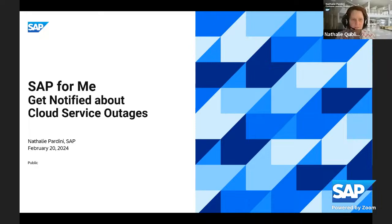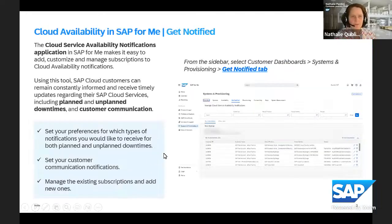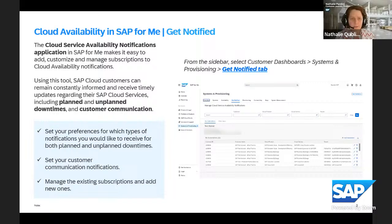Thanks, Larissa! I'm going to present our notification tool in SAP for Me — the Cloud Service Availability Notification application, also called 'Get Notified' as a short name. It makes it easy to add, customize, and manage subscriptions to cloud availability notifications. Using this tool, customers can remain constantly informed and receive timely updates regarding their SAP cloud services, including planned and unplanned downtimes and customer communications.